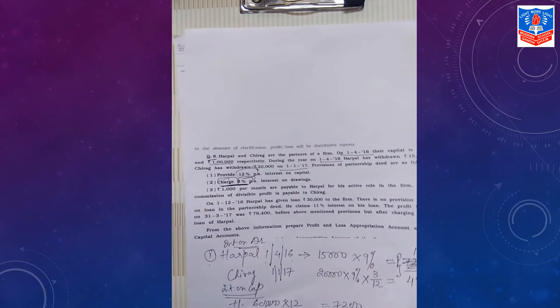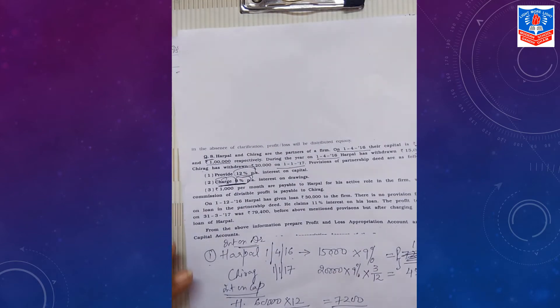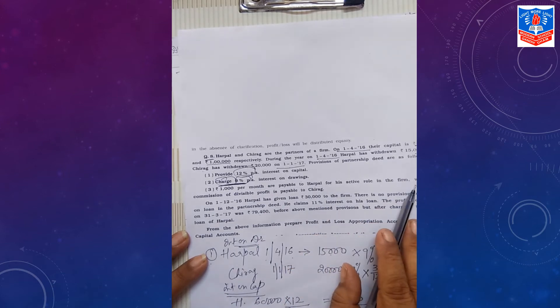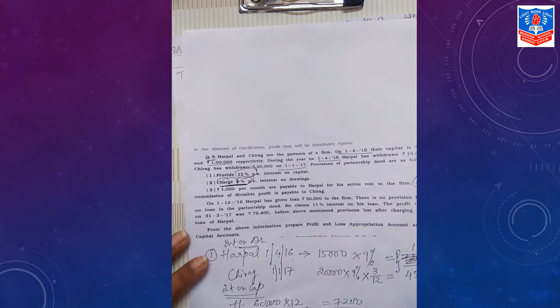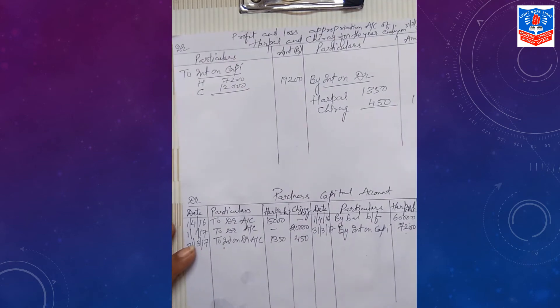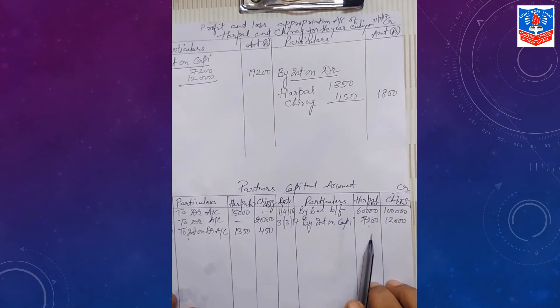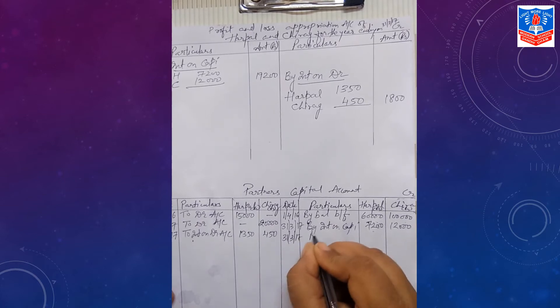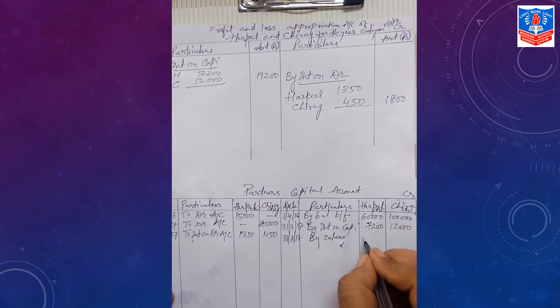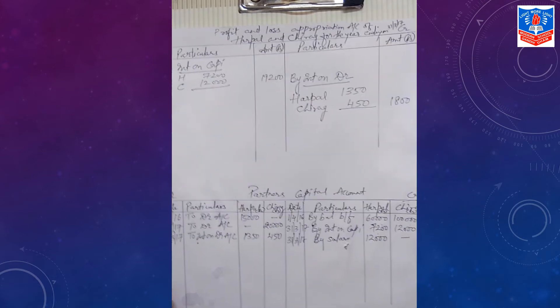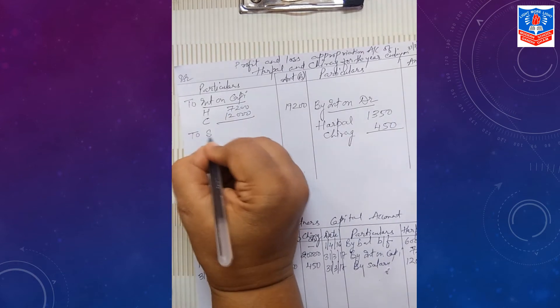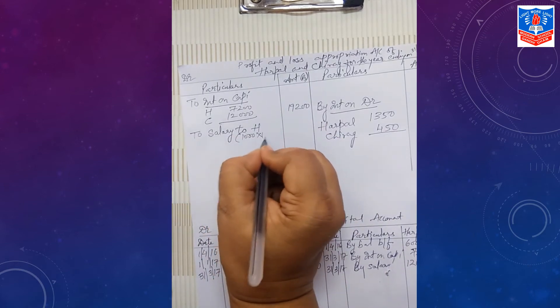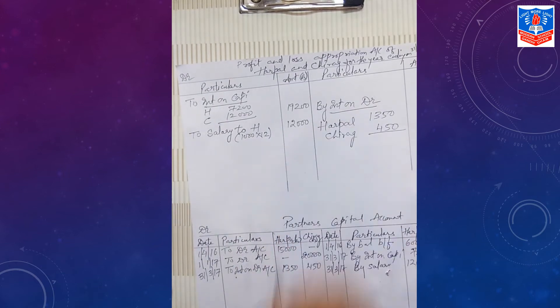Let us go for next information given in the question. Here it is said that third point: Rs. 1,000 per month are payable to Harpal for active role in the firm. Harpal is getting Rs. 1,000 per month, that means income for Harpal. Income for Harpal will be credited to his capital, expense for firm. This is salary or remuneration. Last date of the year, by salary. Only Harpal is getting Rs. 1,000 per month, so for the whole year how much? Rs. 12,000. You can mention here in P&L appropriation debit side: to salary to Harpal, Rs. 1,000 into 12, total of Rs. 12,000.